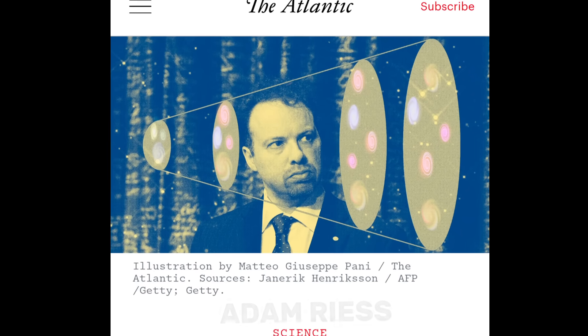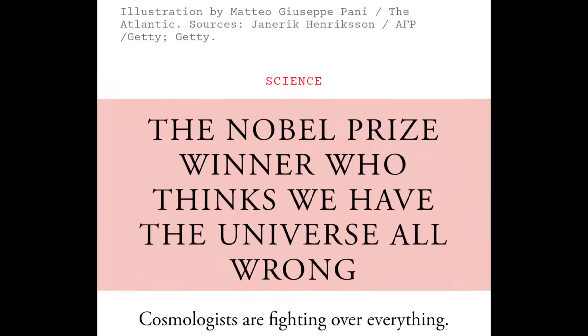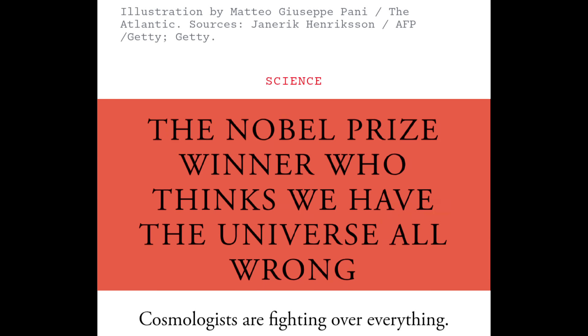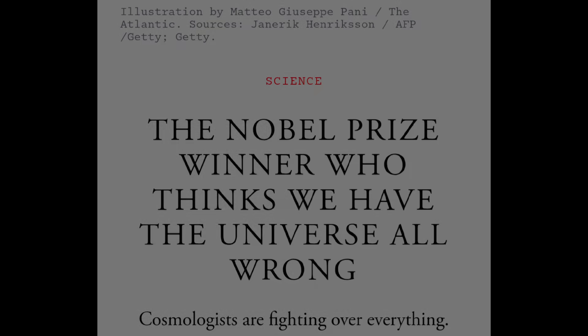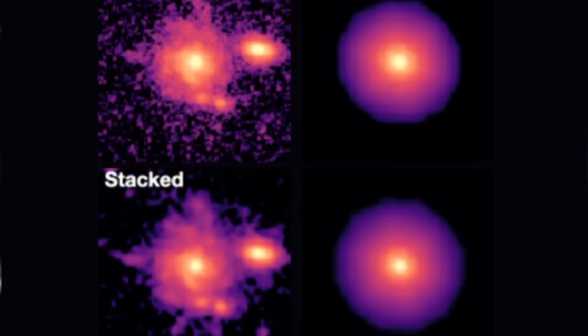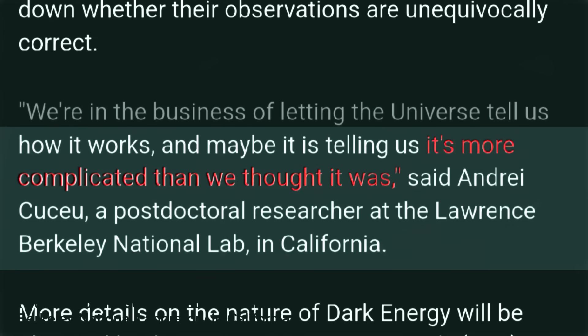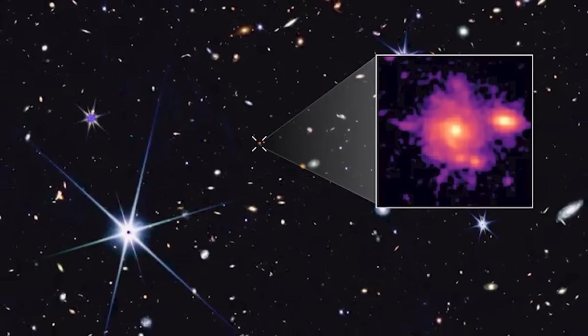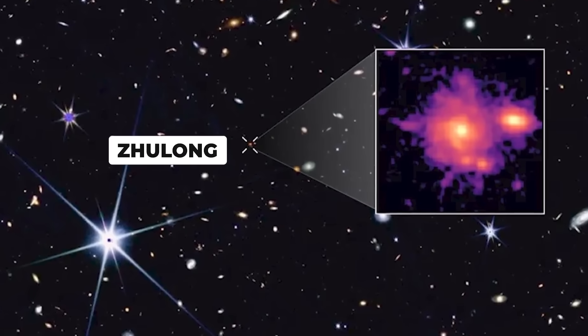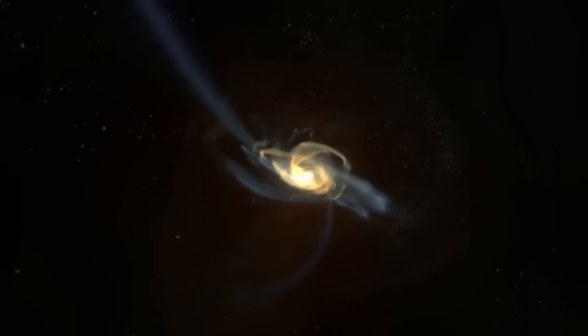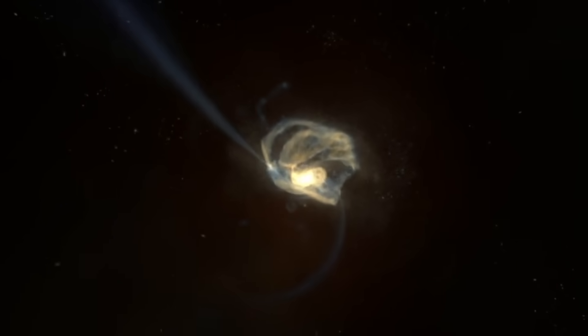Recently, Nobel Prize winner Adam Rees revealed that we may have gotten the universe completely wrong. And he's not the only one making this claim. Following recent discoveries by the James Webb Space Telescope, many renowned scientists are saying that the universe is far stranger than we previously thought. Just a few days ago, we discussed Julong, the largest Milky Way-like galaxy ever discovered, which formed far too early in the universe's history. That alone challenged everything we thought we knew about how galaxies evolve.